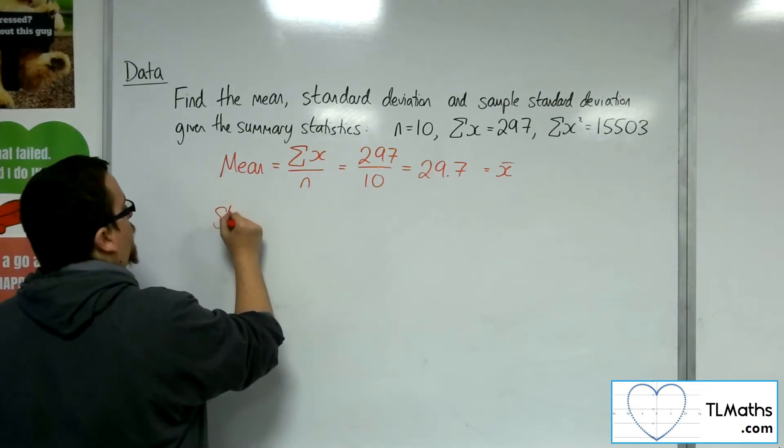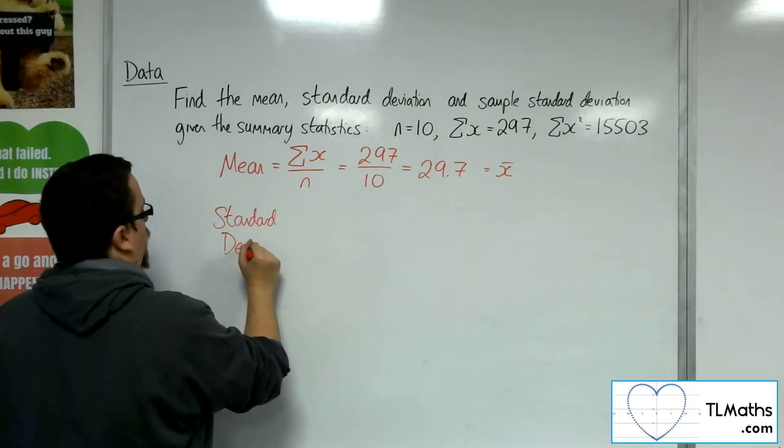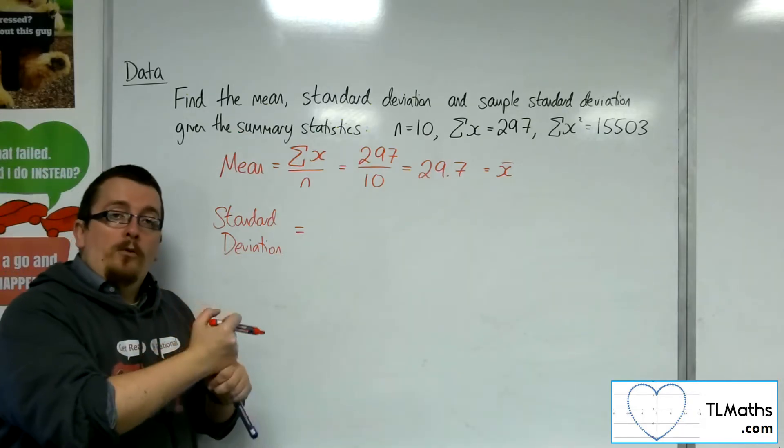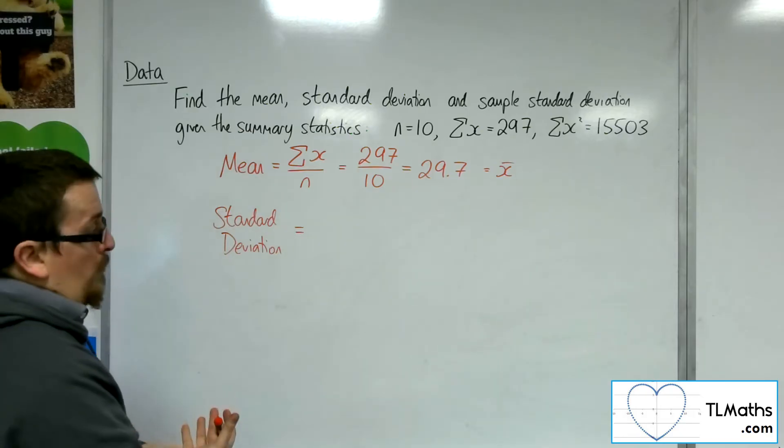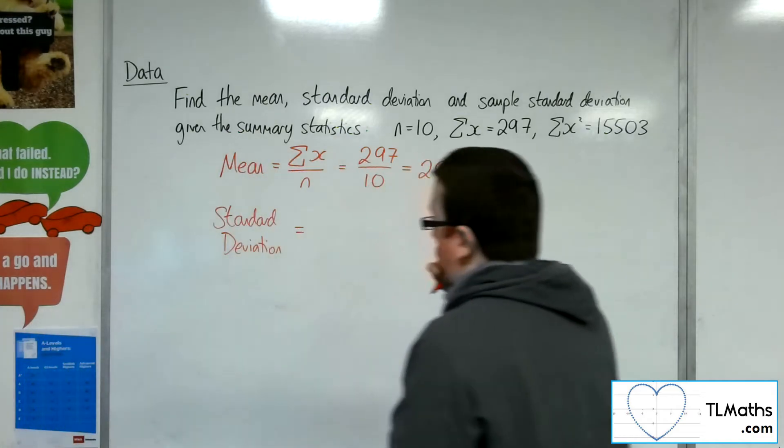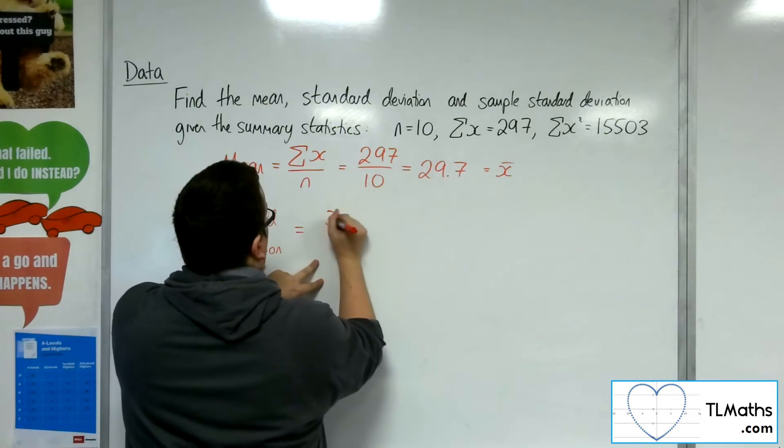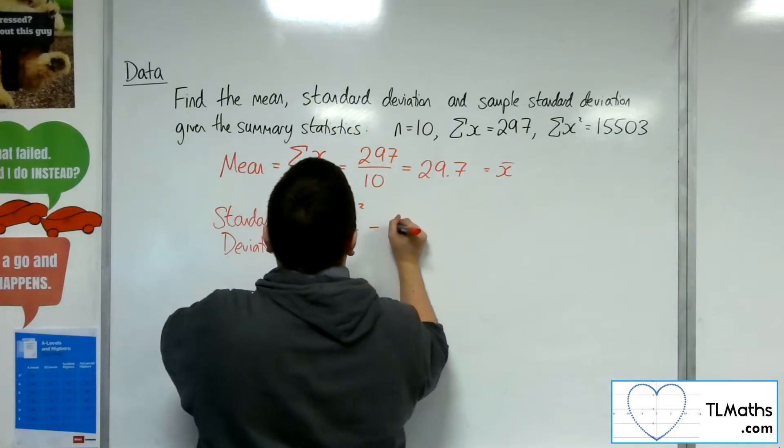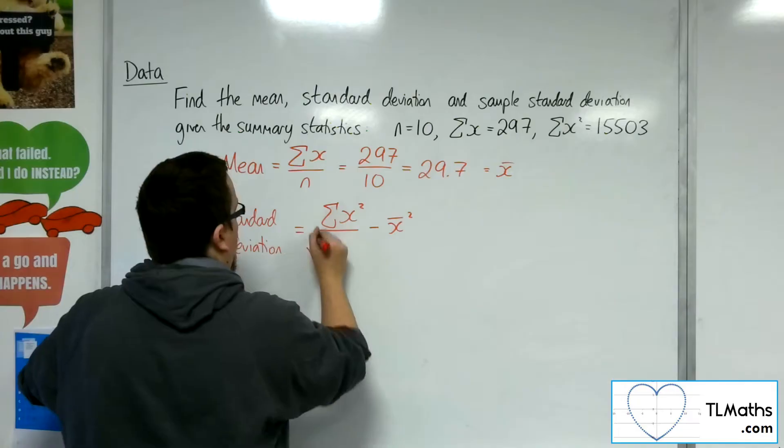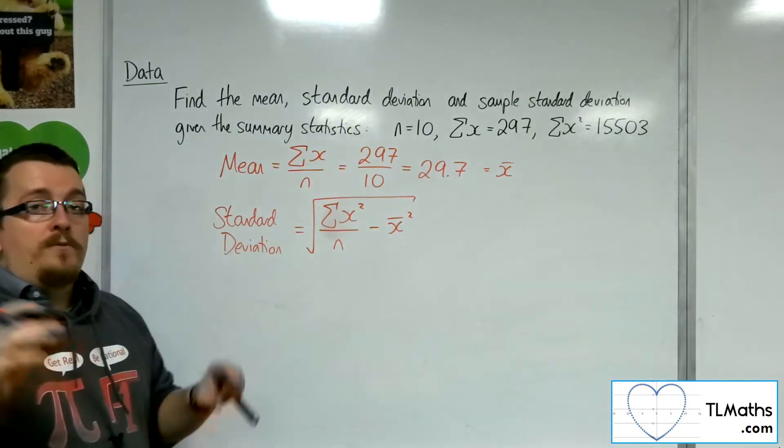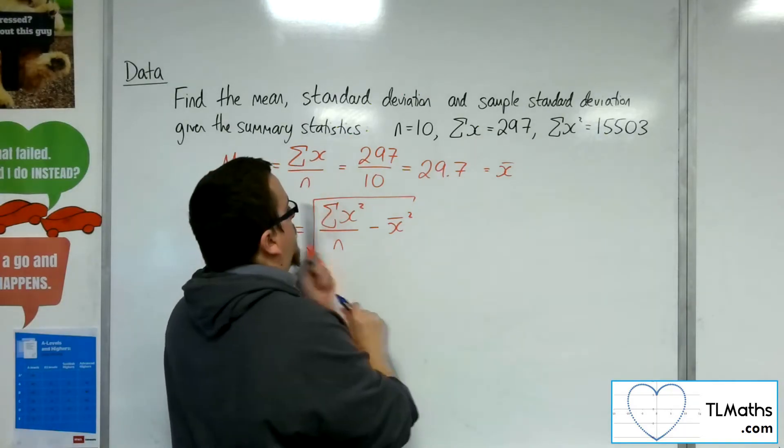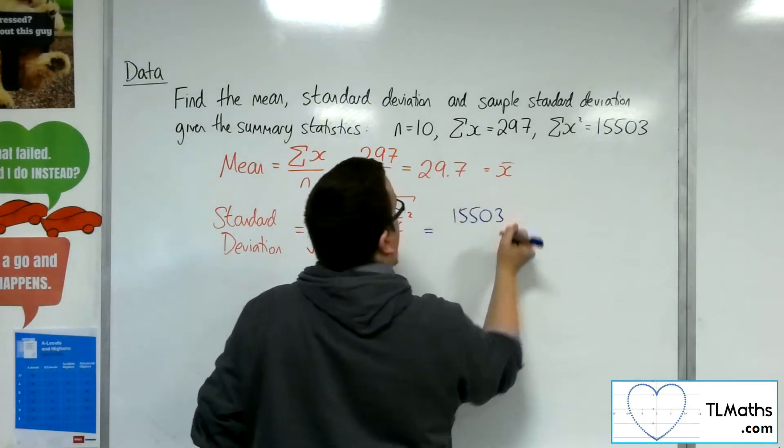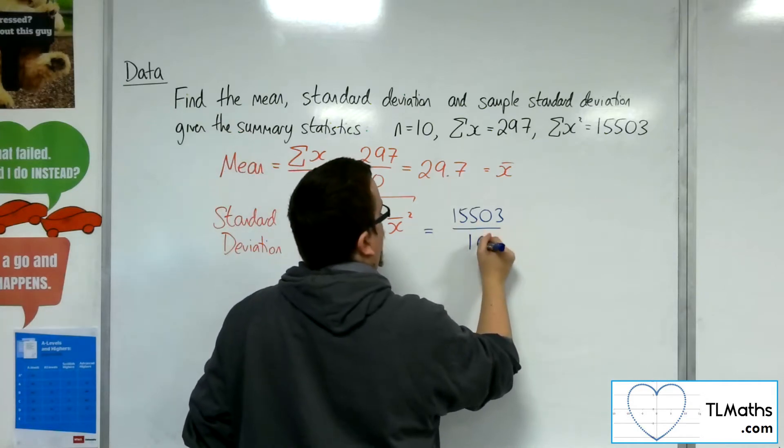Now the standard deviation, we know that's given to us as the square root of sum of x minus x bar all squared divided by n. However, there is the alternative formula that we can utilise that is also given to us. So that is, we've got the sum of x squared divided by n, take away x bar squared, square rooted. Now that we've got the information that is required here, we've got the summation of x squared, the 15503. We need to divide by n, and then we need to take away the mean squared.